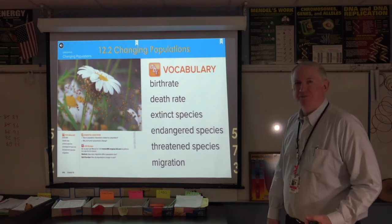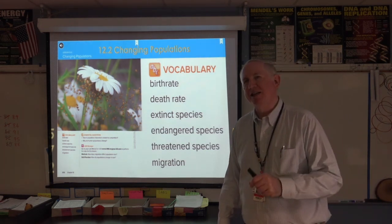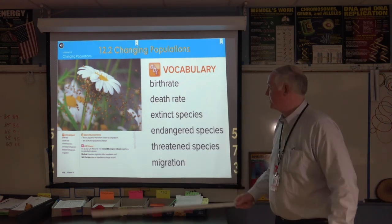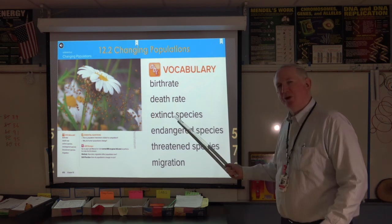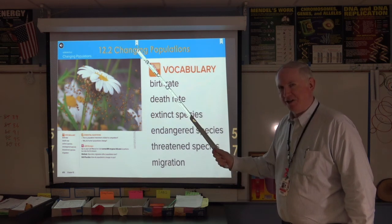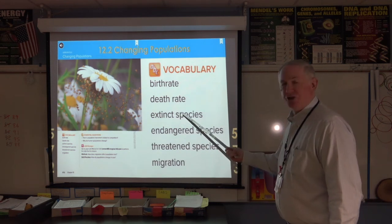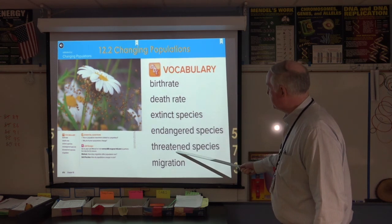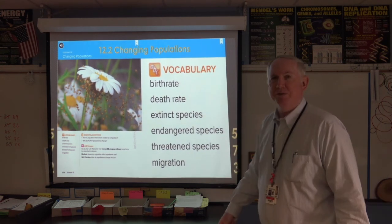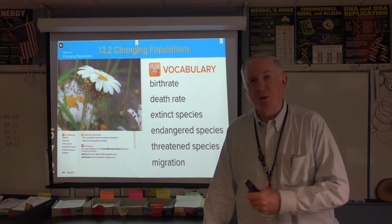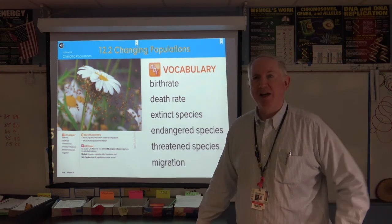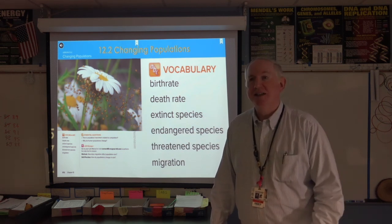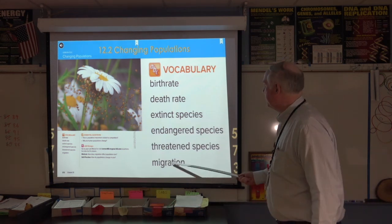We have a few vocabulary words, but I think they're pretty easy to understand. Birth rate, death rate — real simple. Extinct species. Endangered, threatened — you can see how all three of these relate. And migration: since we've explored the great southern white butterfly, we know that they migrate. You've certainly heard of birds that migrate, and we know that sea turtles migrate. So there's a lot of migration all around us here, so that should be a familiar word.